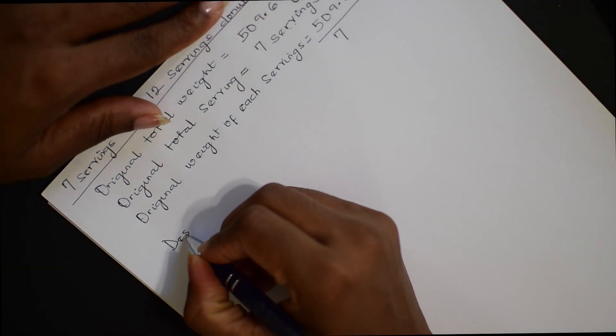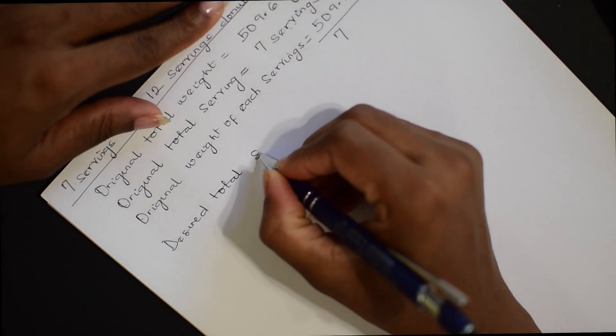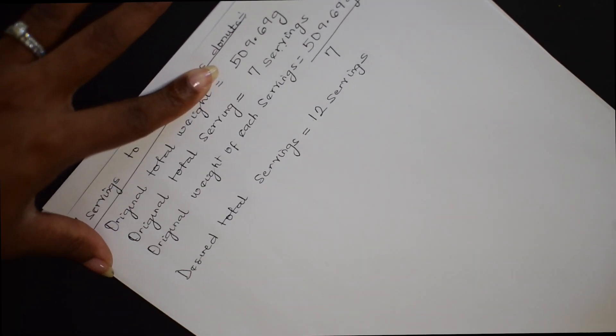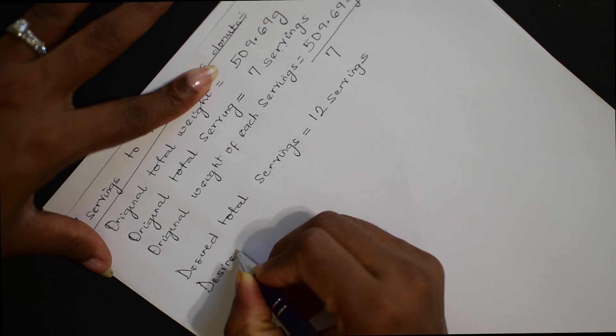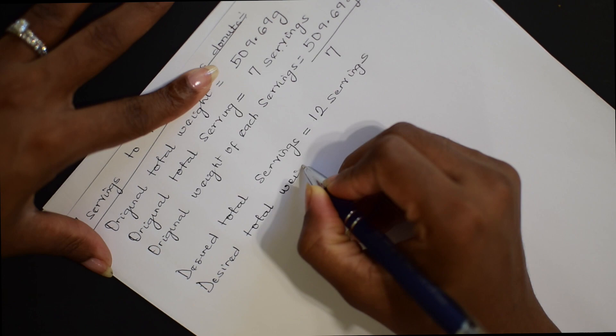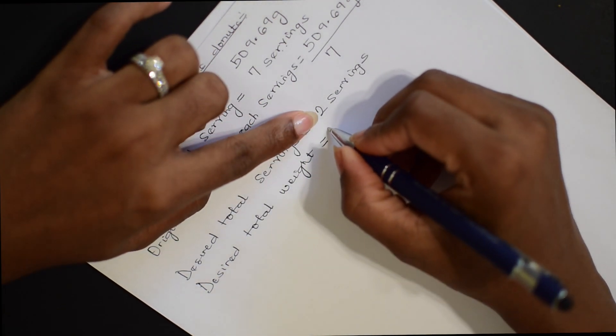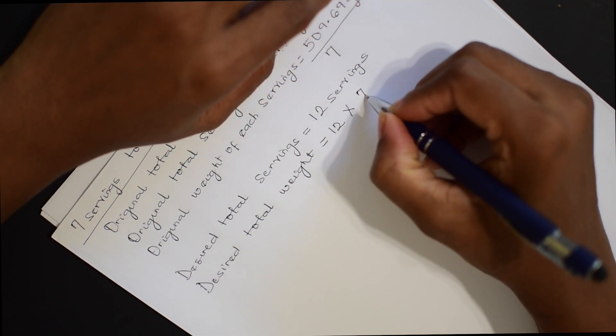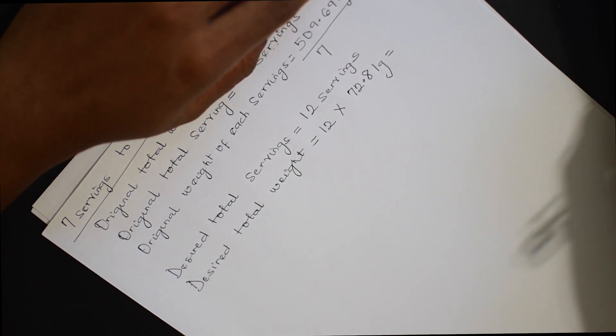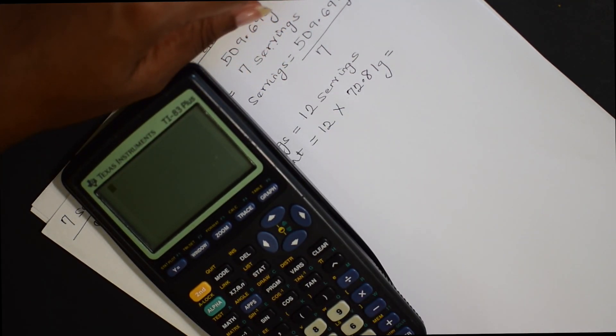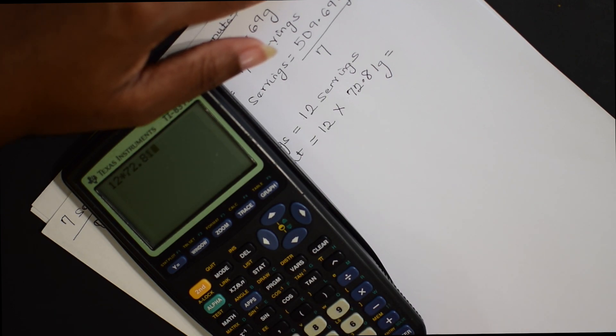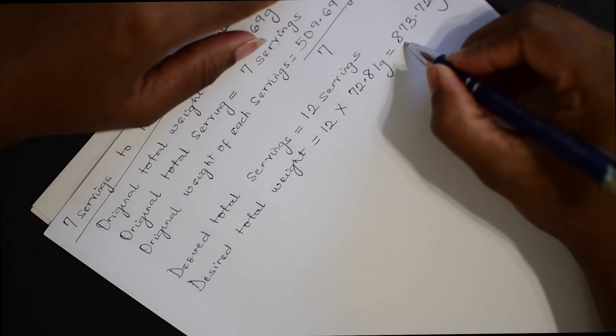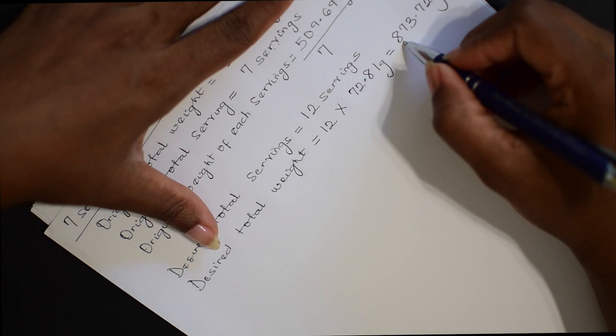For now, I'm still working with the two decimal points. Now, the next question is, what is the desired total servings you want to make? This will equals to twelve servings. The next question is, what would be the desired total weight of our dough? This will likely be this number of servings times the original weight of each servings. And if you do that summing up, it will give you about 12 times 72.81. That will give you 873.72 grams.